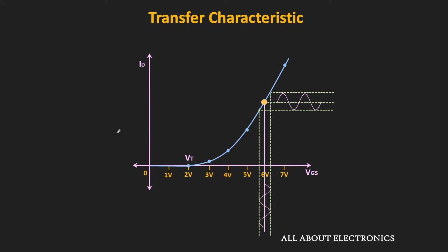So mathematically, this transconductance is equal to the change in the drain current divided by the change in the voltage Vgs. That means for the given change in the voltage Vgs, how much change will occur in the drain current. And graphically, it is the slope of the curve at the operating point.